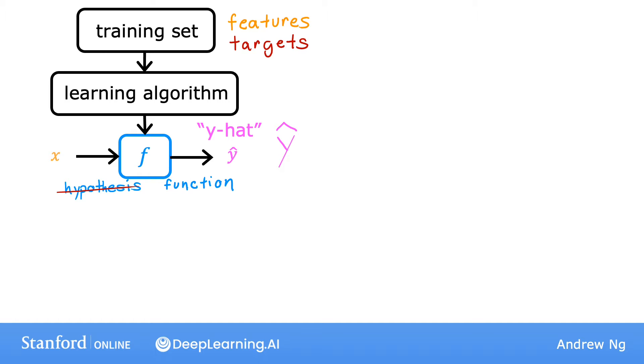The function f is called the model. x is called the input or the input feature, and the output of the model is the prediction y-hat.